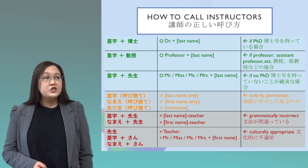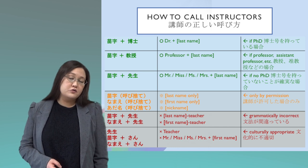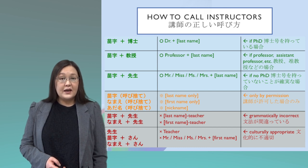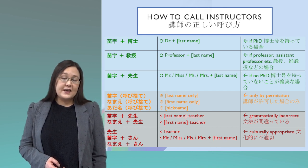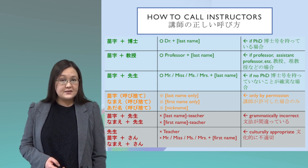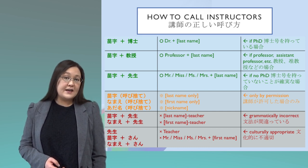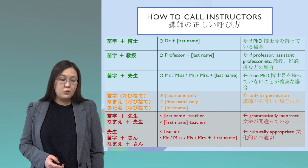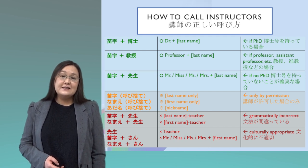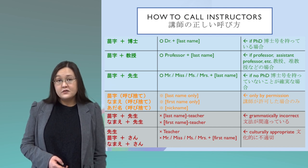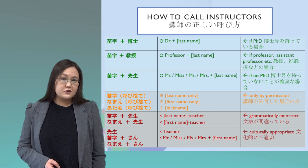There are some ways that Japanese students might want to refer to their instructor that are not correct in English. In Japanese, you can attach sensei as a suffix to a name. But in English, we cannot attach the word 'teacher' as a suffix — teacher is not a suffix, so you cannot add it to a first name or a last name. Also culturally inappropriate would be to say 'teacher' by itself.